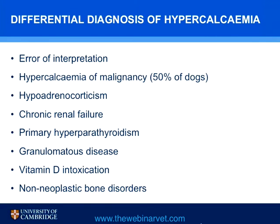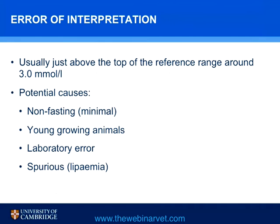The differential diagnosis of hypercalcemia includes error of interpretation, which will be discussed shortly. Hypercalcemia of malignancy accounts for approximately 50% of cases in dogs. Hypoadrenocorticism accounts for about 30% of cases in dogs. Other differentials include chronic renal failure — mainly in young dogs with active calcium turnover — primary hyperparathyroidism, granulomatous disease, vitamin D intoxication, and non-neoplastic bone disorders, which may cause mild elevations.